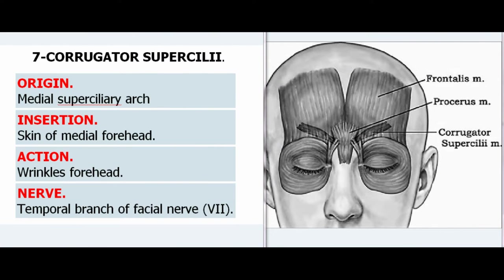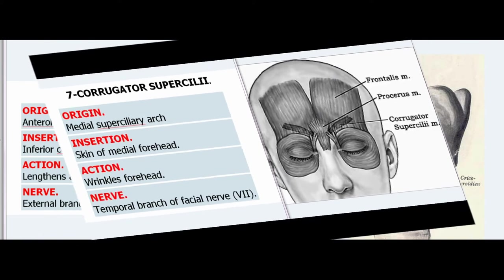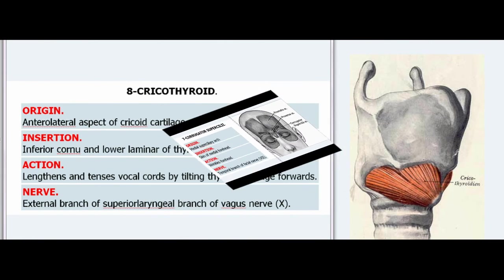7. Corrugator Supercilii. Origin: Medial superciliary arch. Insertion: Skin of medial forehead. Action: Wrinkles forehead. Nerve: Temporal branch of facial nerve (VII).